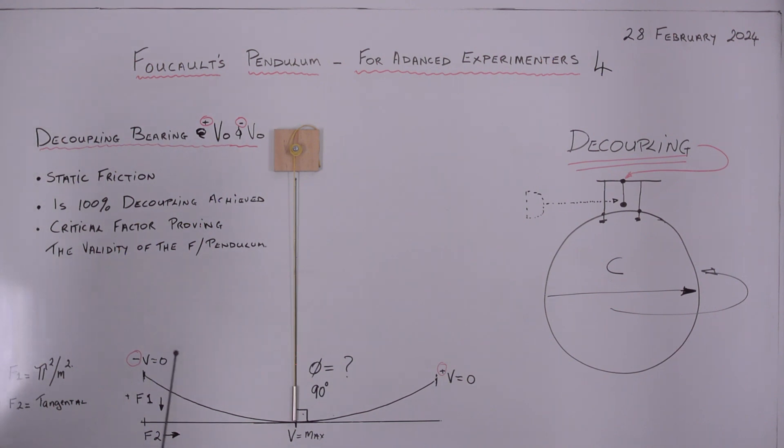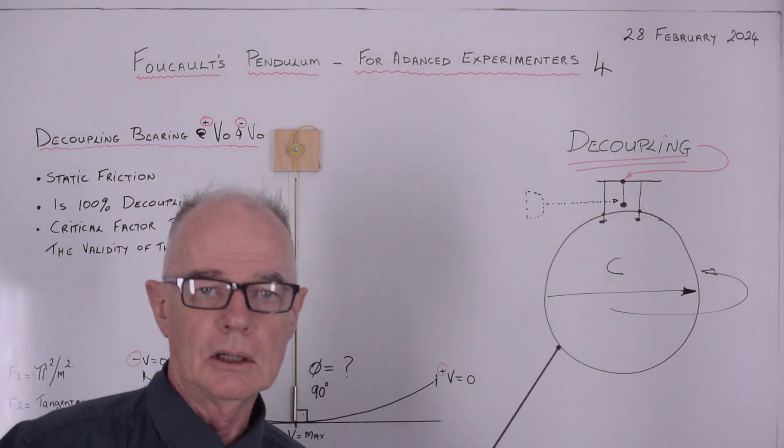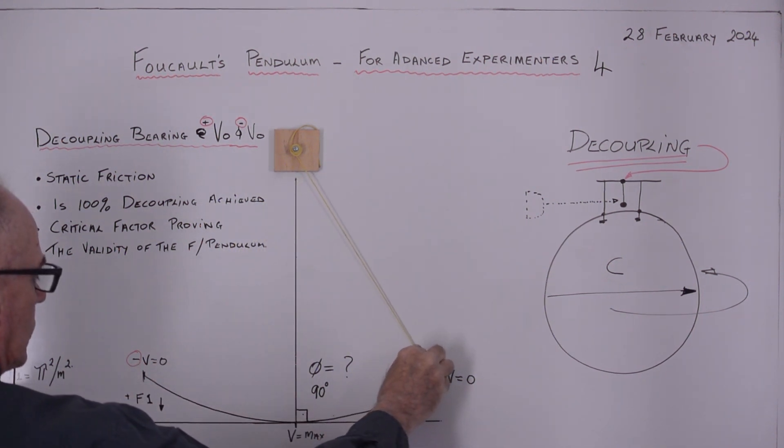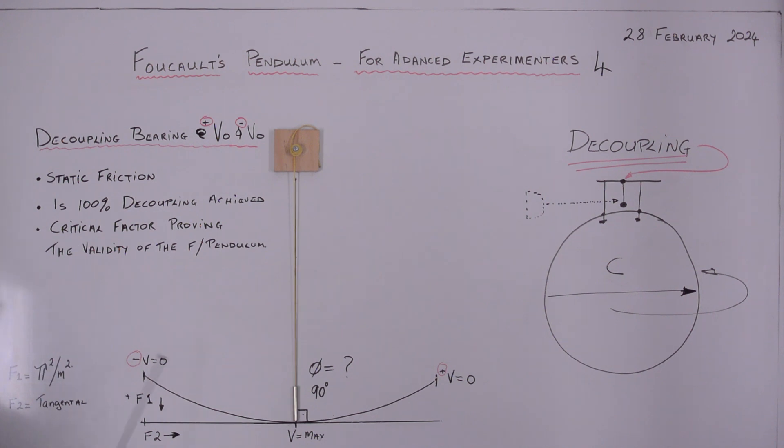Just going over what we explained in the previous video number 3: when the pendulum swings back and forth, it comes to these points here and it stops, makes a dead stop, and returns to this point here which is velocity at maximum.